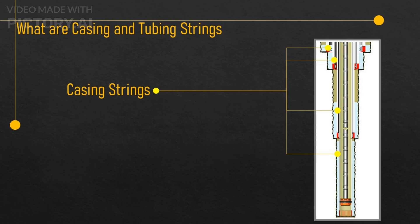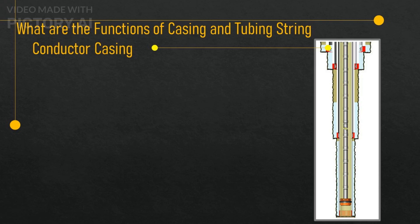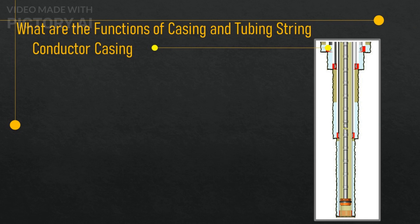What are the functions of casing and tubing strings? Casing and tubing strings have different functions in a well, and they are usually installed in a sequential order from the largest to the smallest diameter. A typical well may have the following casing and tubing strings. Conductor casing string: this is the first and largest casing string that is installed in the well, and it is usually driven or jetted into the shallow soil or seabed near the surface. It serves as a foundation for the wellhead equipment and the blowout preventer, and it also prevents loose soil or sand from caving in and obstructing the wellbore. The conductor casing string may have a diameter of 30 to 42 inches (76 to 107 centimeters) and a length of 100 to 300 feet.